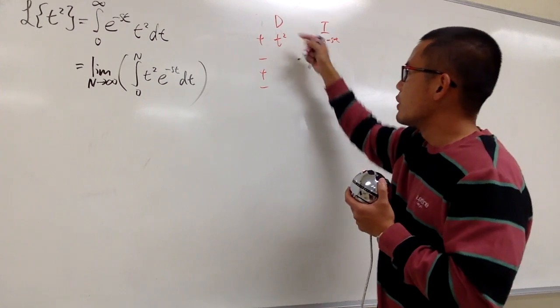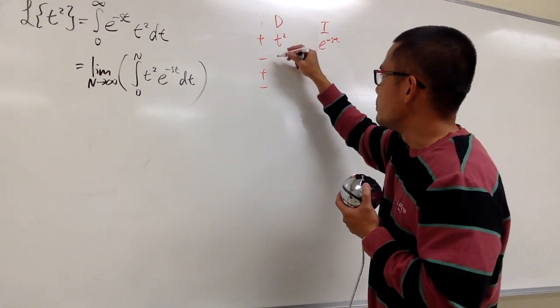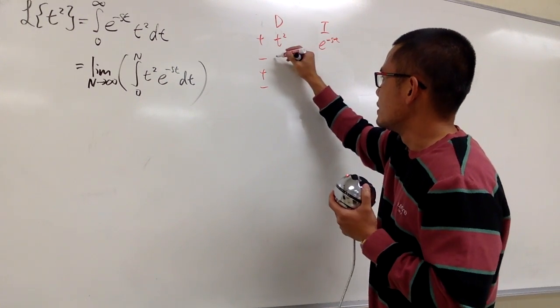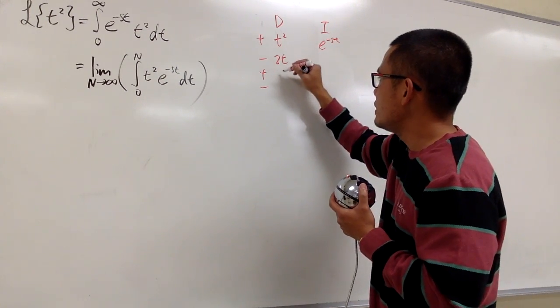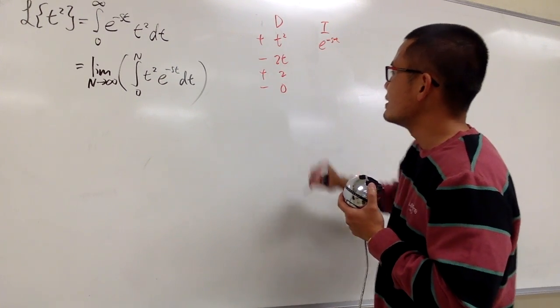Differentiating t squared, we get 2t, then 2, then 0 in the D column.